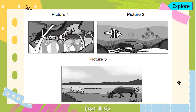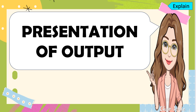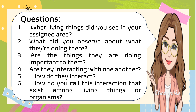This is the sample picture you are going to use in the activity. Now it's time for you to present your output. Based on your activity, what living things did you see in your assigned area? What did you observe about what they're doing? Are the things they are doing important to them? Are they interacting with one another? How do they interact? How do you call this interaction that exists among living things or organisms?